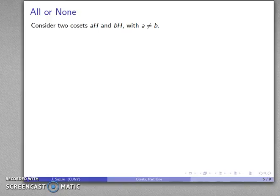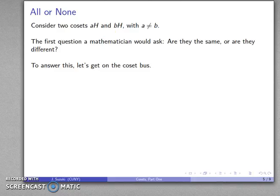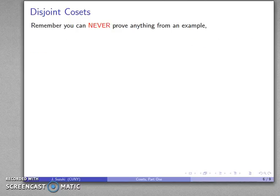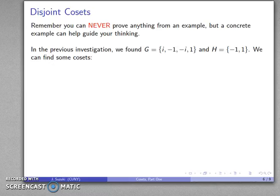Now we can have more than one coset, so let's consider two cosets AH and BH, and assume that A is not equal to B. The first question a mathematician would ask, given two things, is: are they the same or are they different? An important idea in mathematics is that you can never prove anything from an example. However, that doesn't mean examples aren't useful — a concrete example can help guide our thinking about a concept. So let's take a look. We found our group G and our subgroup H, so we can now find some cosets.